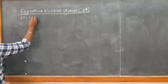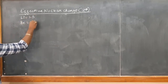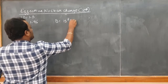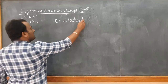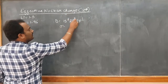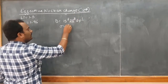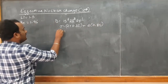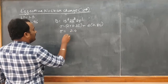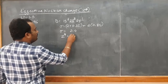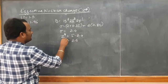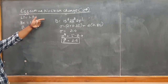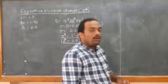For boron, atomic number 5, configuration 1s² 2s² 2p¹. For the last electron: 2 × 0.35 from the 2s and 2p electrons in the same N group, plus 2 × 0.85 from the 1s N-1 shell. Sigma = 2.4. Z star = 5 minus 2.4 = 2.6. As we move from lithium to beryllium to boron, effective nuclear charge increases: 1.3, 1.95, 2.6. Therefore, along the period, atomic size decreases.